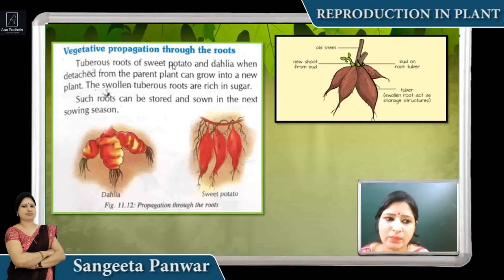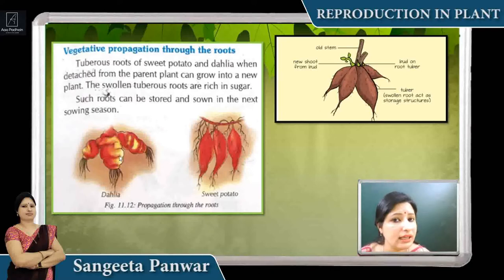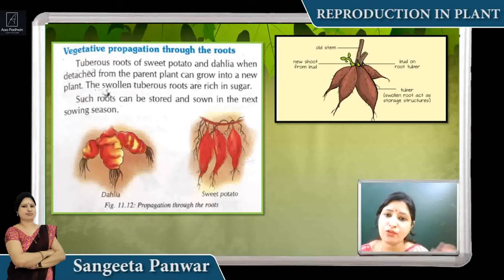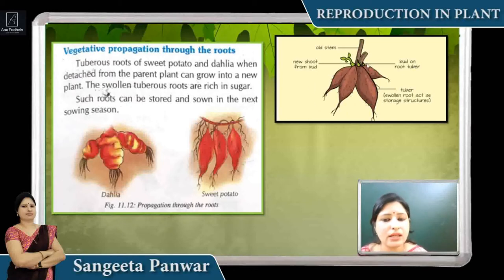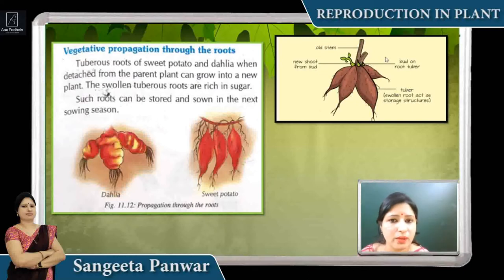Many plants, like sweet potatoes and dahlias, have roots that are swollen in tuberous form because they store food. Similarly, the roots of sweet potatoes and dahlias store food, and they are capable of growing into a new plant. When we separate them and give them favorable conditions, they grow into a new plant.